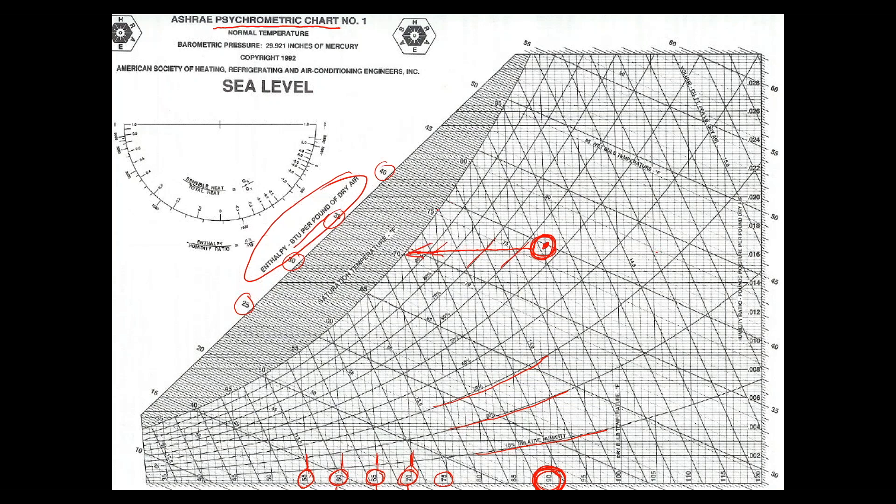Now, the saturation curve is telling you, at this condition, if we take 90 degree air, and I probably didn't draw this exactly right, if we take 90 degree air, we would end up somewhere around 70, 72 degrees is where you would see the dew point. Okay? That's where the air cannot hold any more water, and literally it starts to rain. Okay? So, that's kind of interesting.